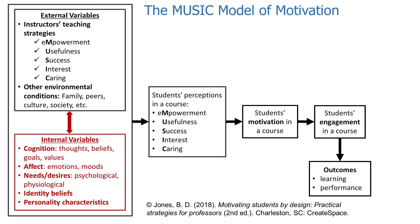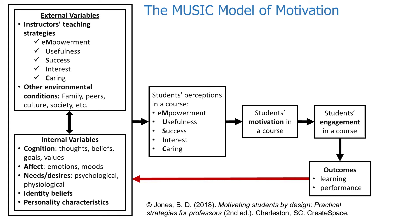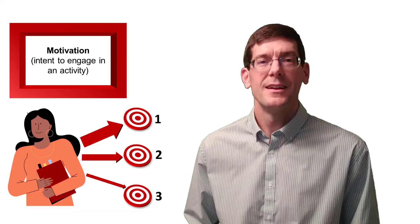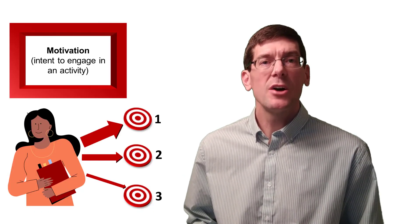These are just some of the important internal variables that can affect students' perceptions in a course. What we see here is how external and internal variables affect students' perceptions about a course, which affects their motivation, engagement, and learning. But it doesn't stop there — this is a cycle. Students examine the outcomes, and that may change their internal variables. For example, if a student thought they were good at a subject but then did poorly on a test, their beliefs about their ability may be lowered. The teacher might also change their instructional strategies to review concepts so students can learn more content.